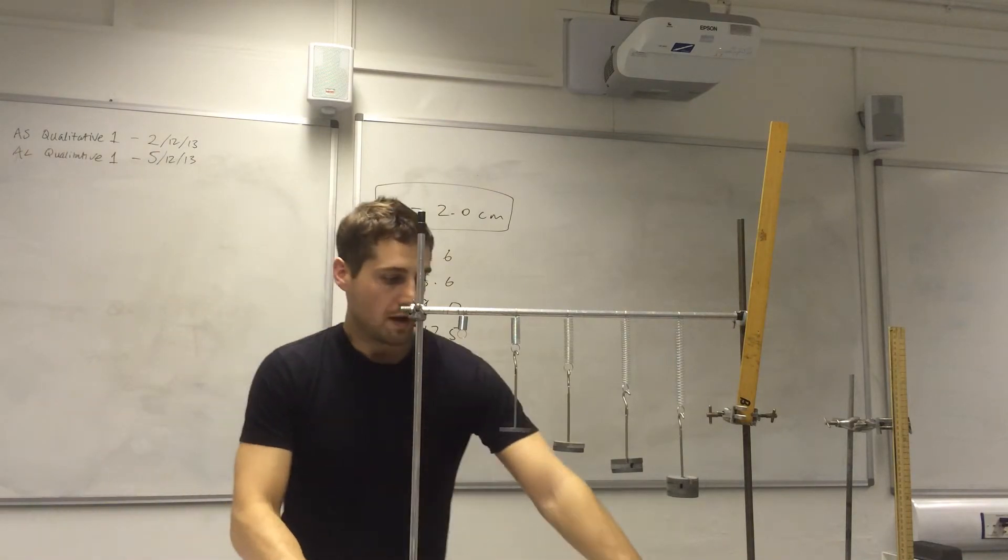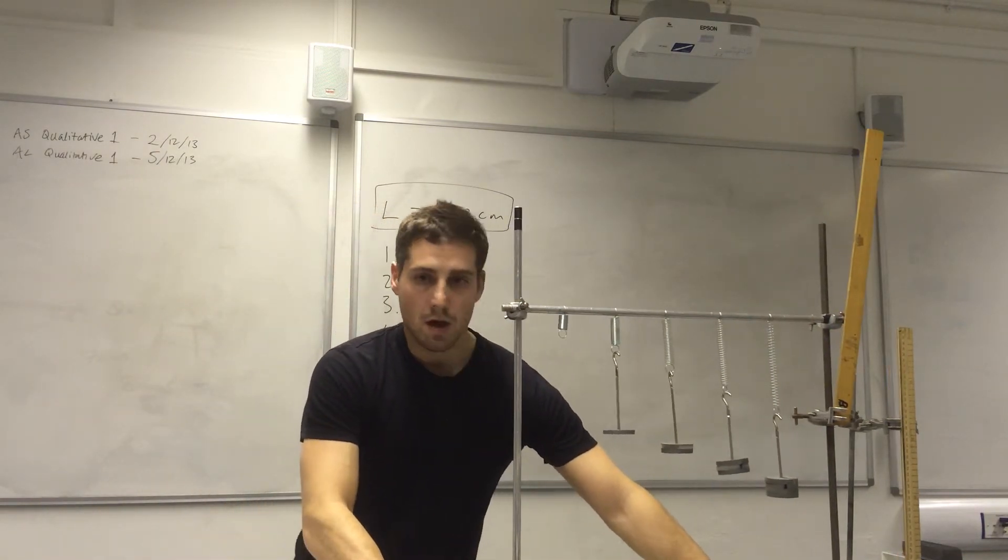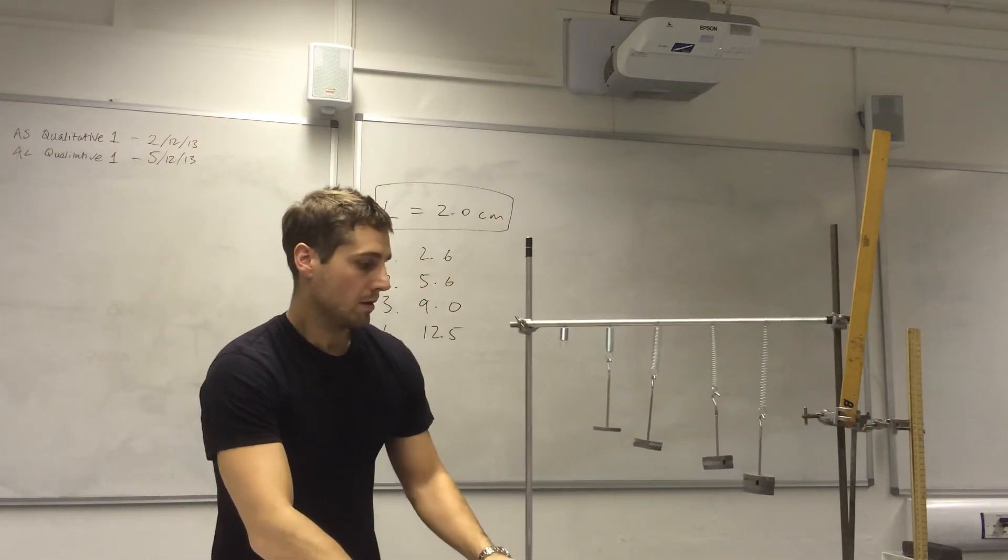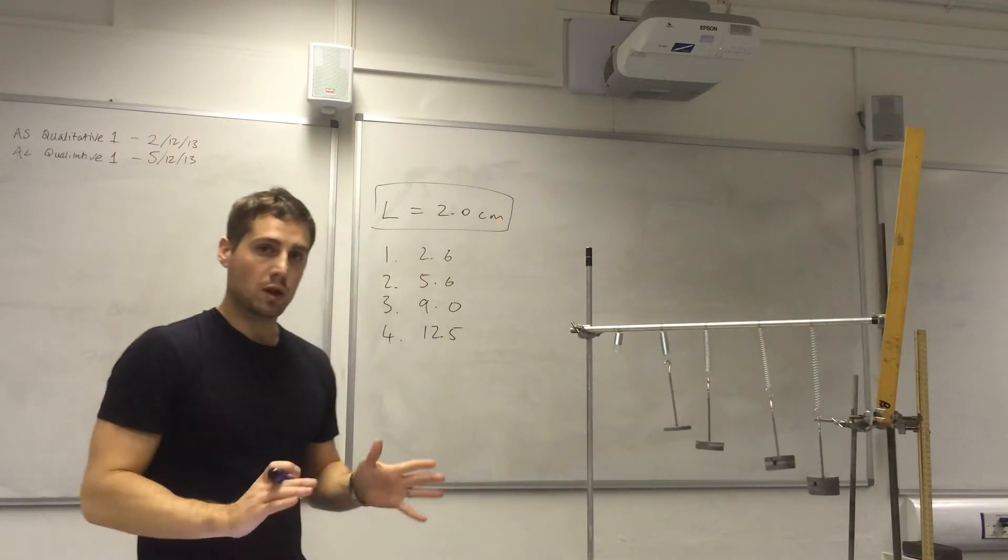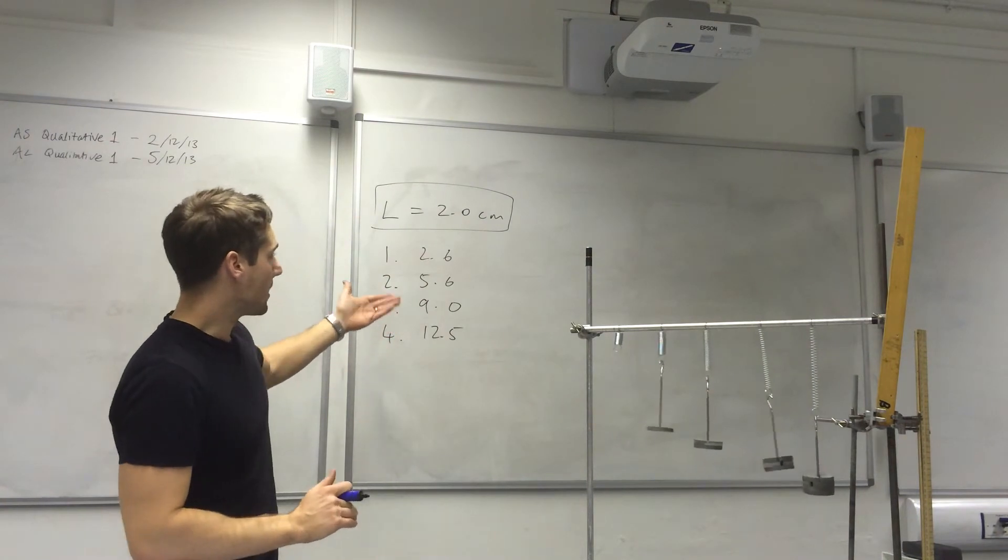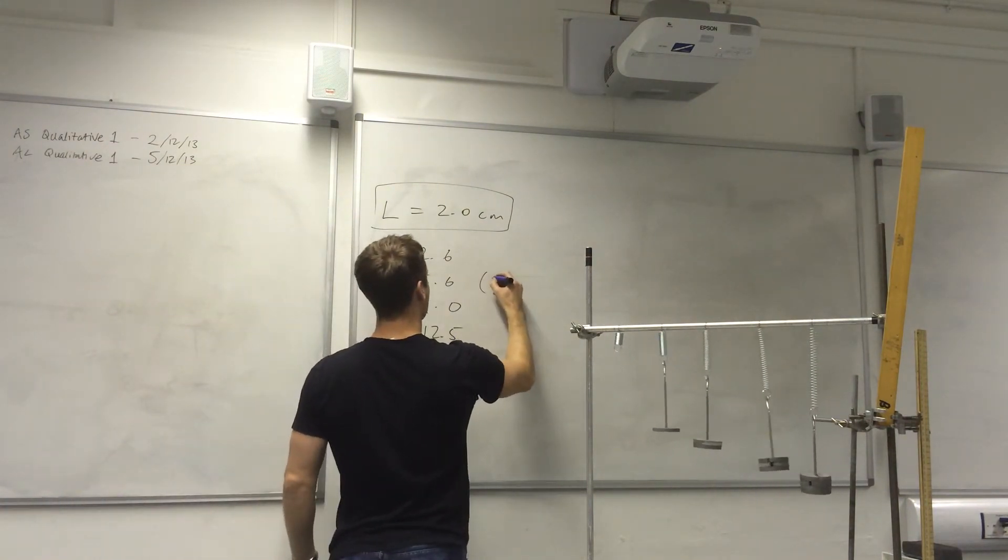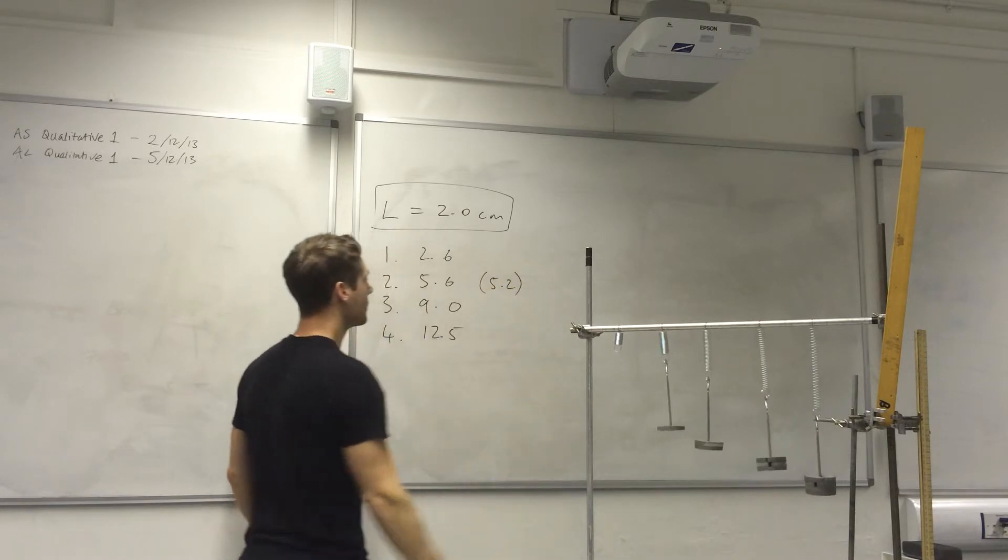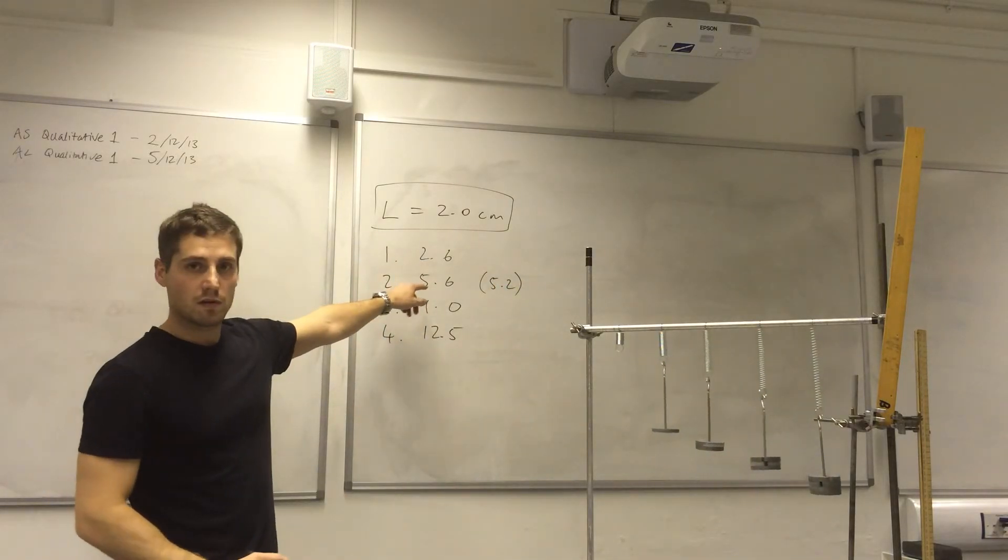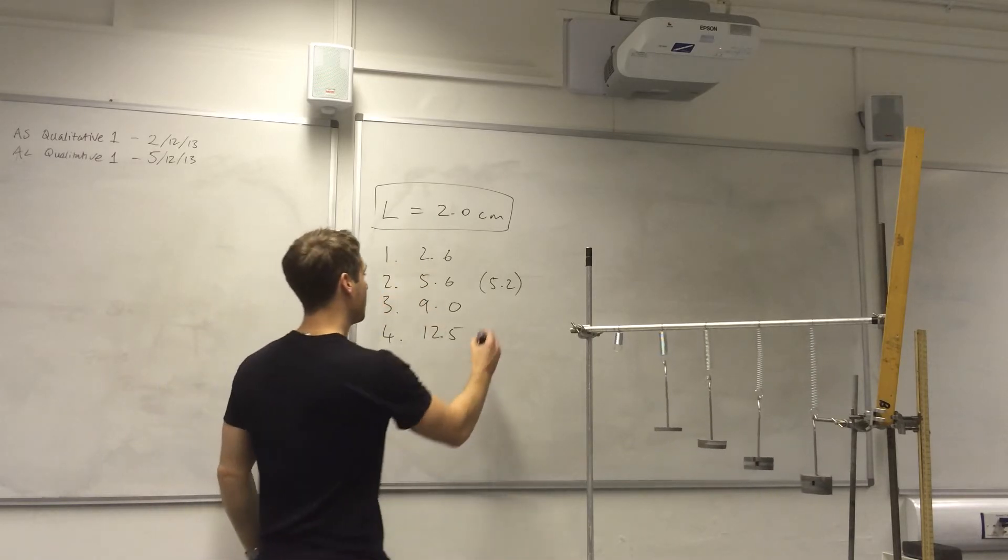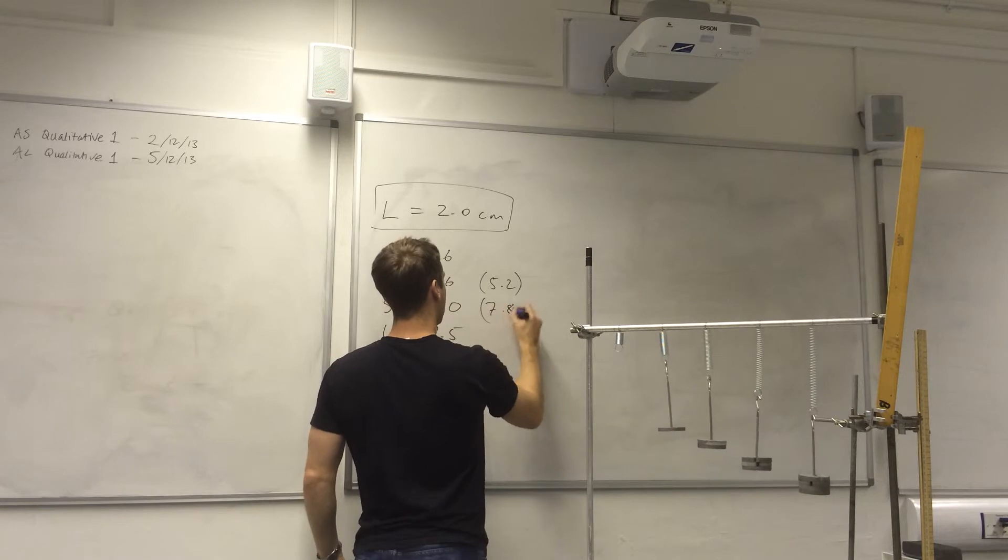In order to confirm a directly proportional relationship we are looking for when we double the load for the extension to double. So here we should have got about 5.2. That's not too far away from that. Here we should have got 7.8. That's a little further away.